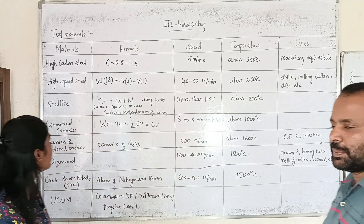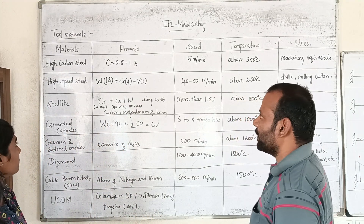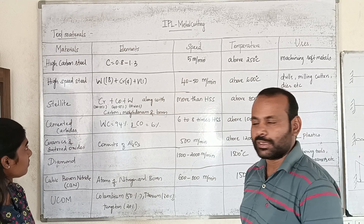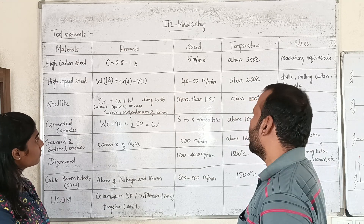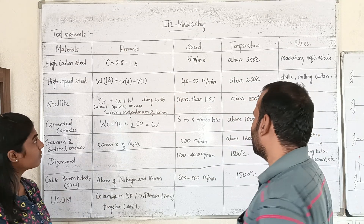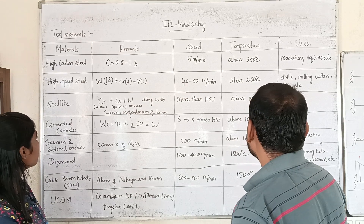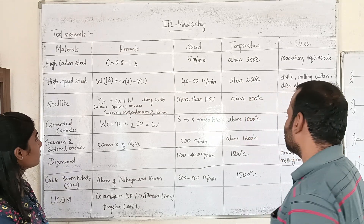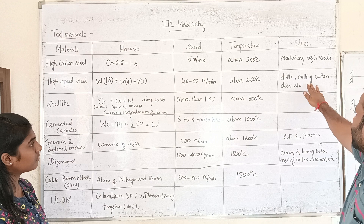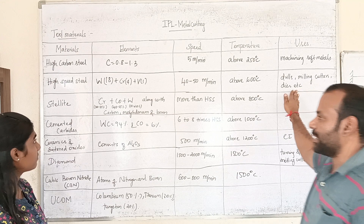High-speed steel contains tungsten, chromium, and vanadium. The speed is higher compared to high carbon steel. The temperature is above 600 degrees Celsius. We can use it for drills, milling cutters, and dies.